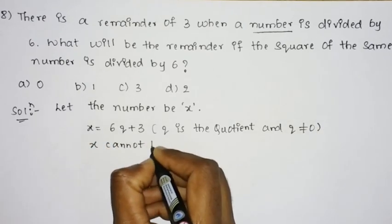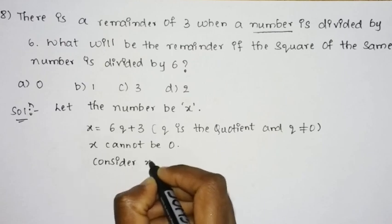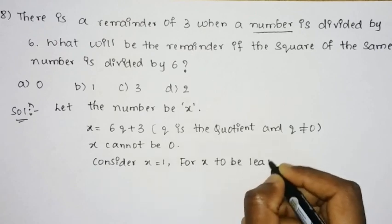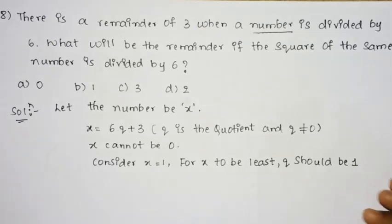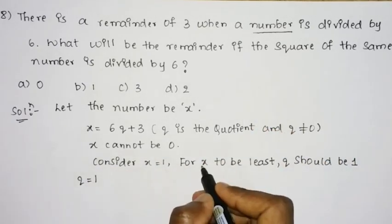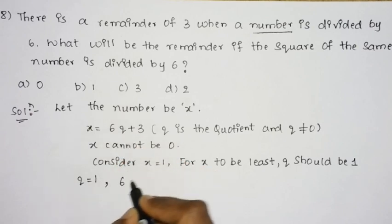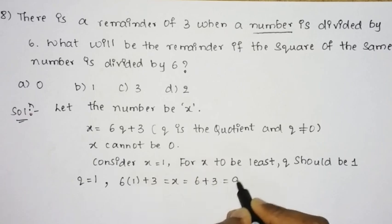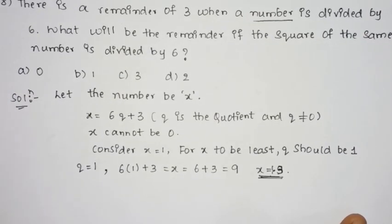Therefore x cannot be 0. For x to be least, q should be 1. So we consider q = 1. To obtain the value of x: 6 × 1 + 3 = 9. So the value of x is 9.